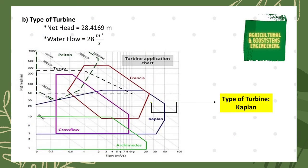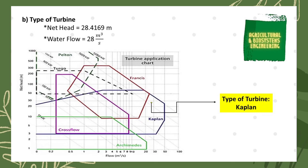Next, we determine the type of turbine to be used in the hydroelectric plant. We use the values of the net head and the water flow to plot on a turbine selection chart. The net head serves as the y-axis and the water flow as the x-axis. The plotted point falls in the Kaplan turbine region, so the type of turbine to be used is a Kaplan turbine.